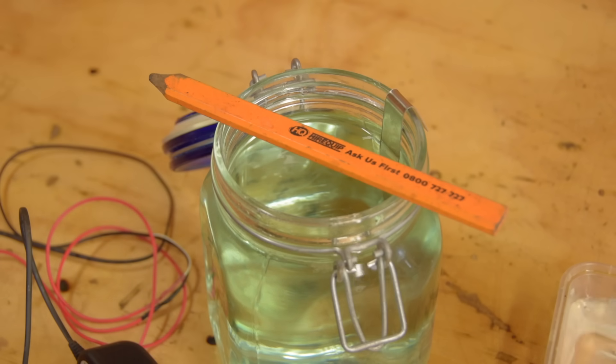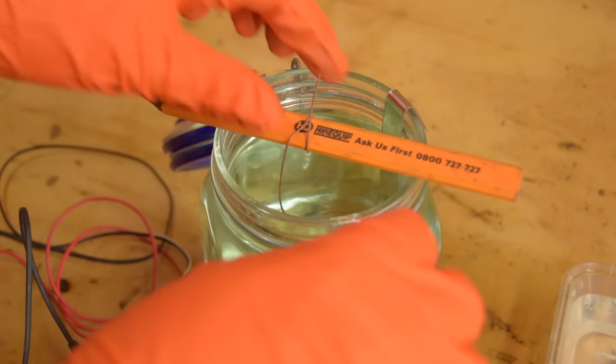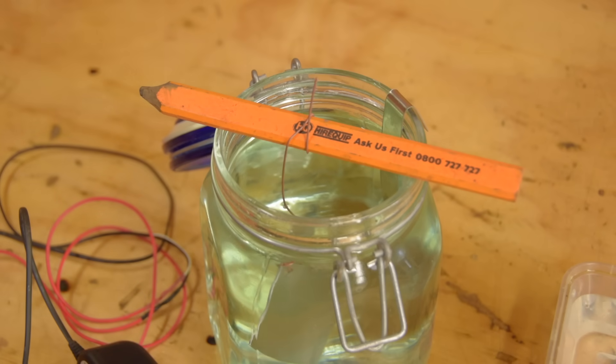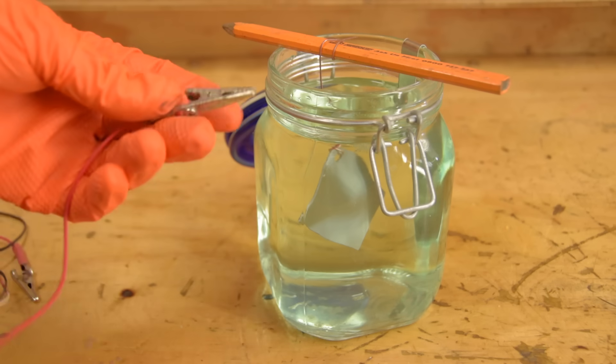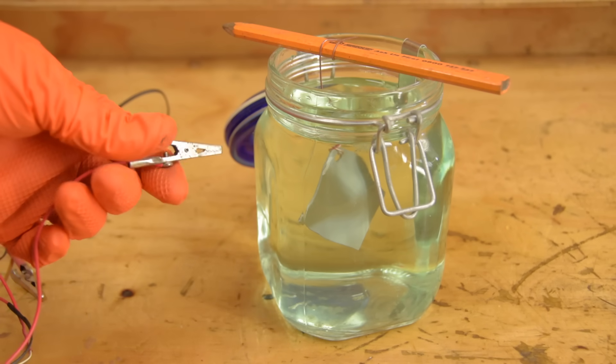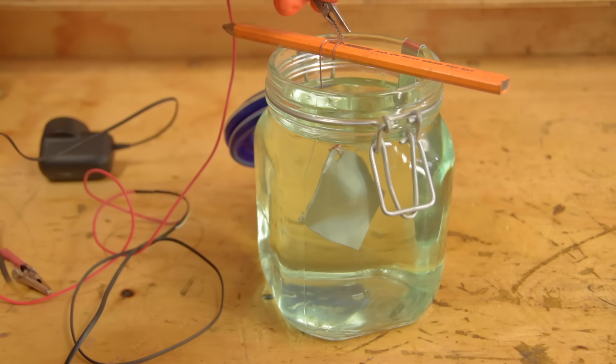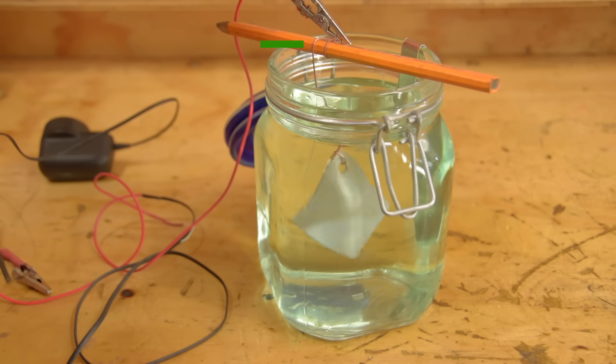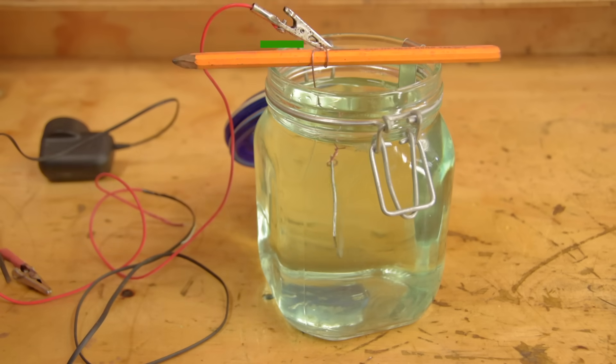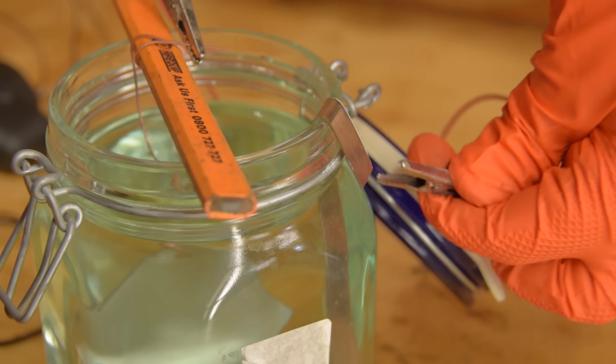Dangle the part into the electrolyte, as far away from the anode as practical. Connect negative to your part. Connect positive to the nickel anode.